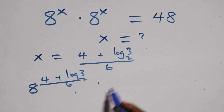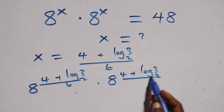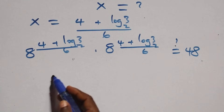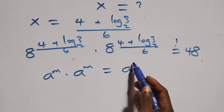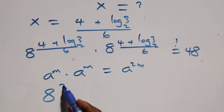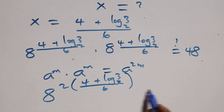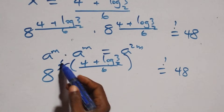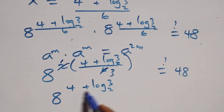Let's check if this satisfies the given problem. We substitute back: 8 raised to power (4 plus log₂3) all over 6, equals 48? Using the same-base multiplication rule — a raised to power m times a raised to power m equals a raised to power 2m — we get a raised to power 2 times (4 plus log₂3) all over 6, equals 48. The 2 multiplies in, giving a raised to power (4 plus log₂3) all over 3, equals 48.